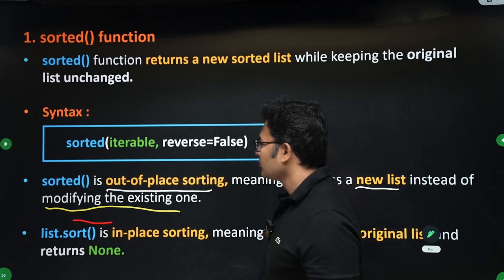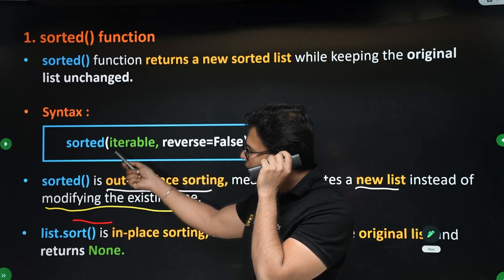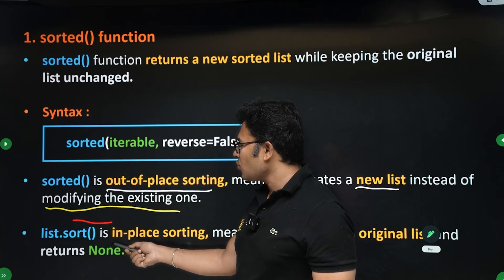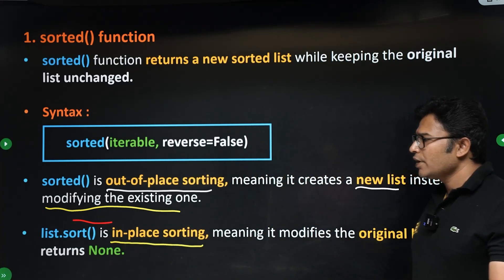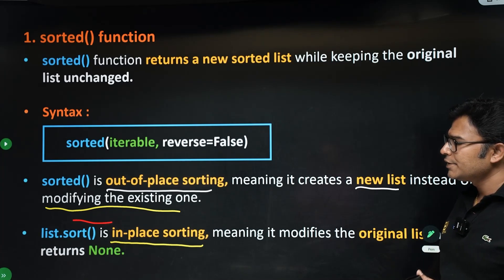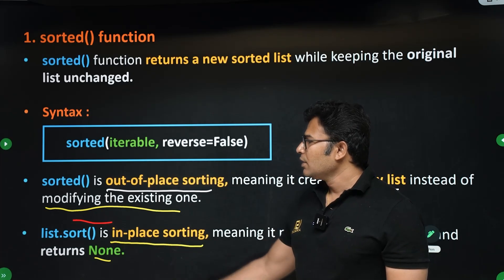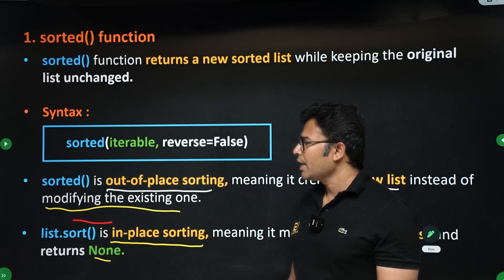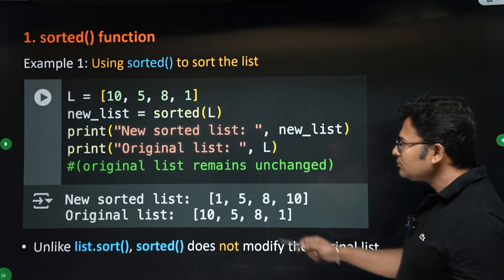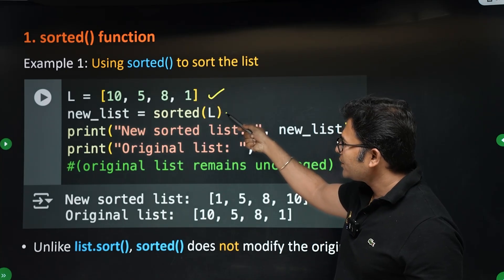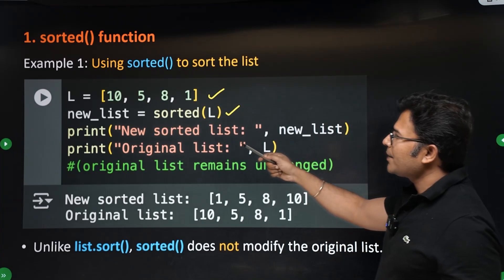We've already seen list.sort(). The key difference is: sorted() gives you a new sorted list, while list.sort() performs in-place sorting — it sorts the list itself and returns None. For example, if you have a list l and apply sorted(l), you get a new list which you can capture in a variable like new_list.